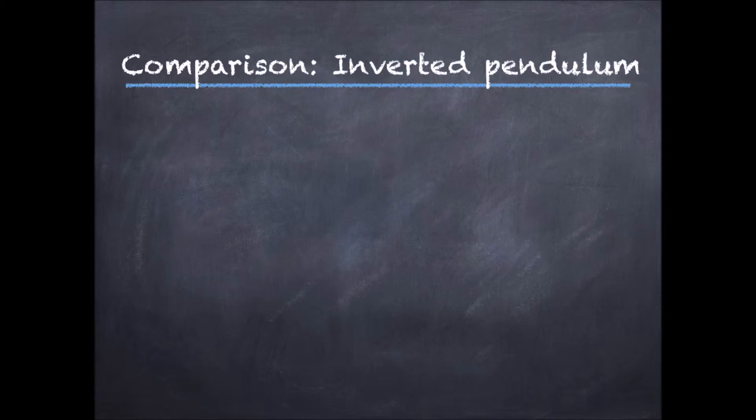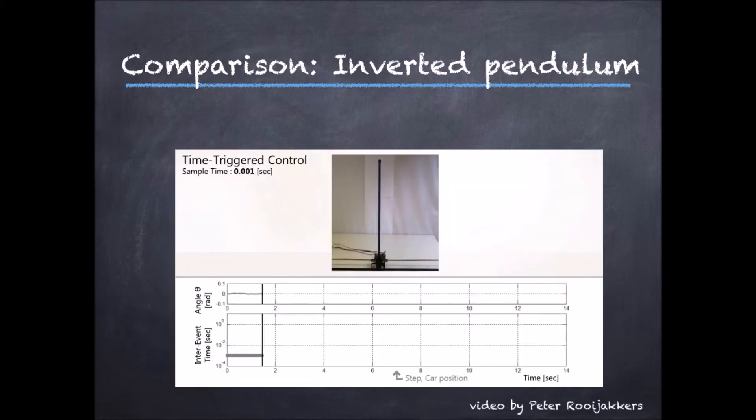Let us now compare the two strategies, periodic control and Lebesgue sampling, for a classical control example, the inverted pendulum. We start with periodic control, closing a loop at 1 kHz. So, 1000 times per second, the control input is being refreshed. The system is behaving quite well, and it can even recover from disturbances.